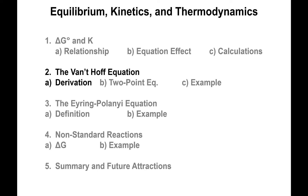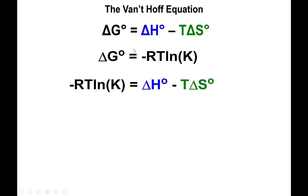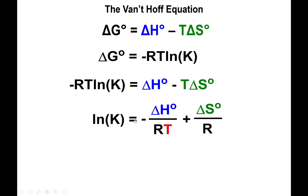We talked about the relationship between ΔG and K. We're going to extend our approach by looking at the relationship from the point of view of ΔH and ΔS. Specifically, ΔG equals ΔH minus T·ΔS — that's the master equation of thermodynamics for spontaneity. We already determined that ΔG equals negative RT·ln(K), so we substitute ΔG with ΔH minus T·ΔS, and then isolate for ln(K) by dividing both sides by negative RT.